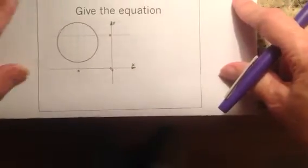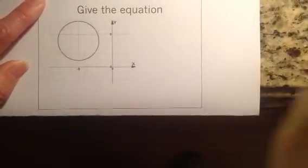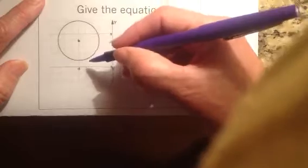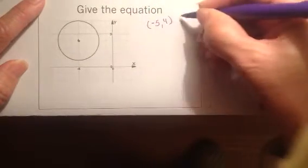But what do we do if we're given just a picture? Well, we can find the center of this guy, right? The center is going to be about here. And my center is going to be, what is that? That is negative 5, 4. That's my center.